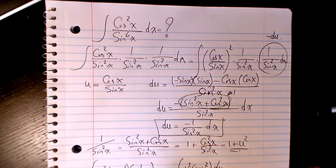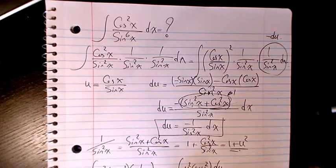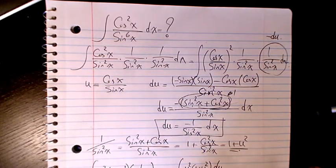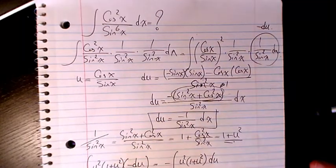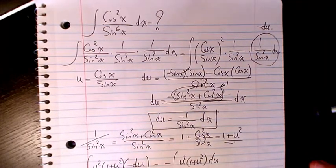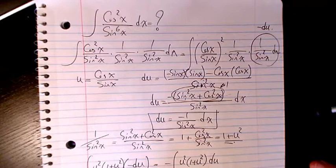After integration it's going to be negative u cubed divided by three, minus u to the power of five divided by five, plus C.